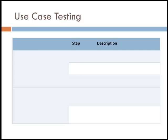In a use case, an actor is represented by A and the system by S. First, we list the main success scenario.